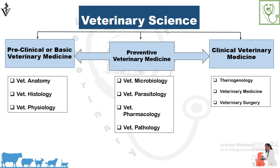In preclinical or basic veterinary medicine, we study about the normal anatomy, histology, and normal physiological functions of the animal body. In preventive veterinary medicine, we study about the causative agents which cause diseases. When a causative agent enters into the animal body, it alters the normal anatomy, normal histology, and normal physiological functions, and this leads to the clinical aspects of a disease in the animal. So preventive veterinary medicine acts as a bridge — without it, you cannot reach clinical veterinary medicine.